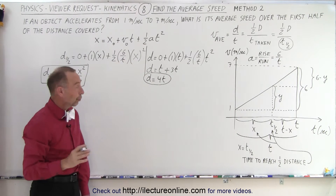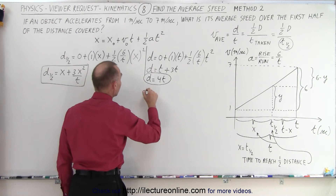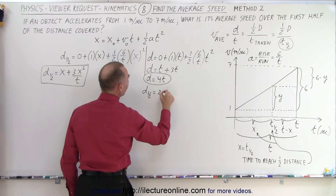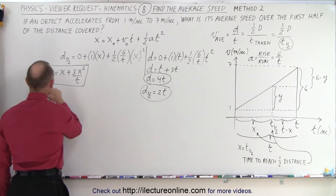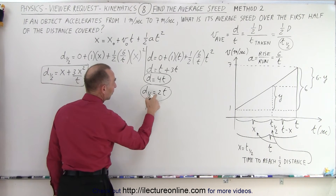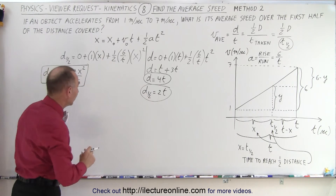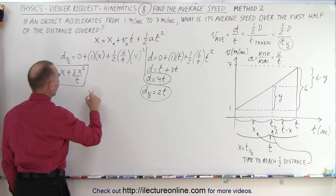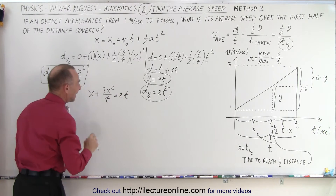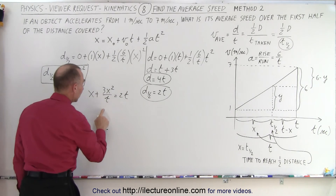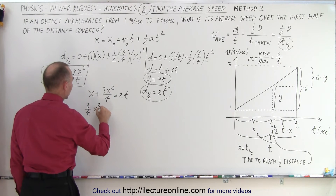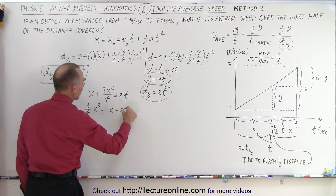If the total distance equals 4T, then half the distance traveled — D to the halfway point — equals 2T. Now, since the expression for the distance to the halfway point is X + 3X²/T, and that must equal 2T, we set them equal and rearrange into a quadratic equation: (3/T)X² + X − 2T = 0.